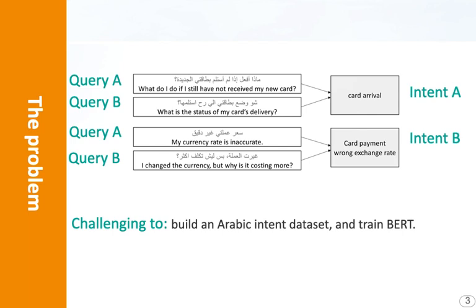The goal is to classify a human query into an intent. For instance, a query which translates to 'what do I do if I still have not received my new card' maps to the intent 'card arrival'. Another example intent is 'card payment and wrong exchange rate'.